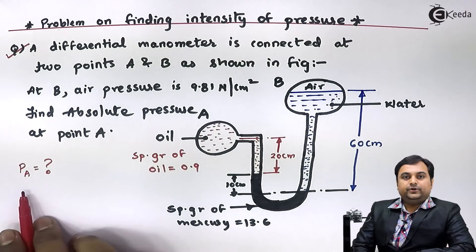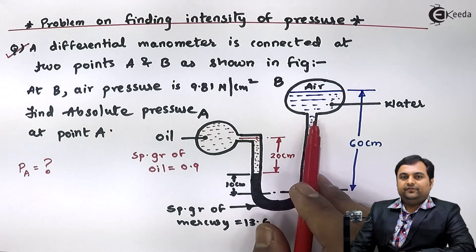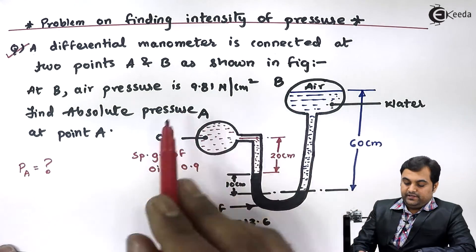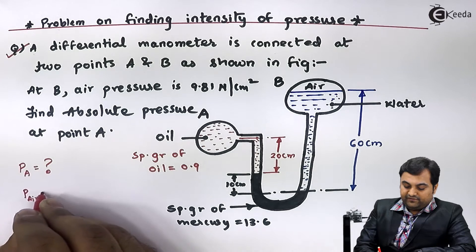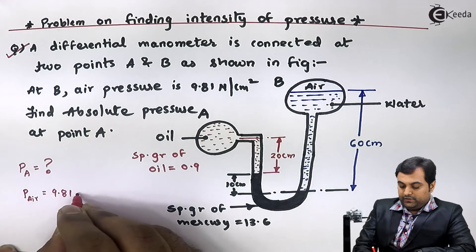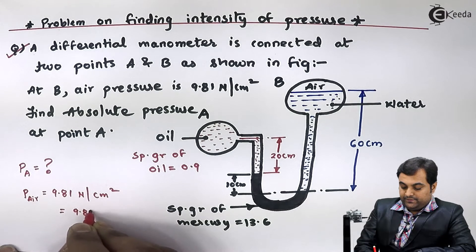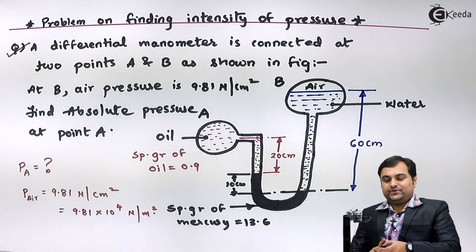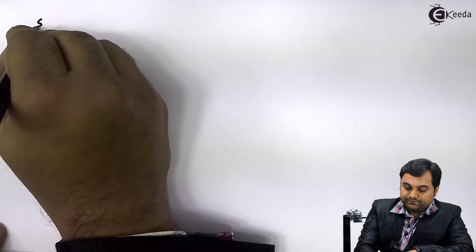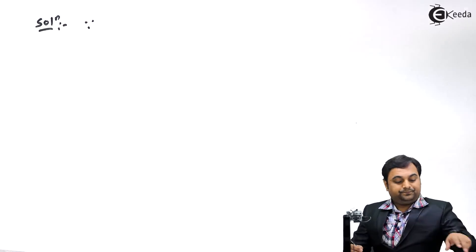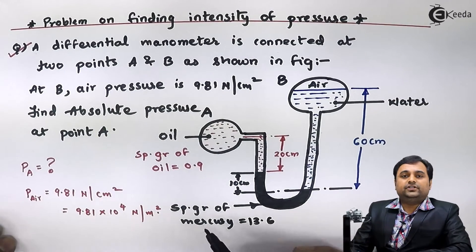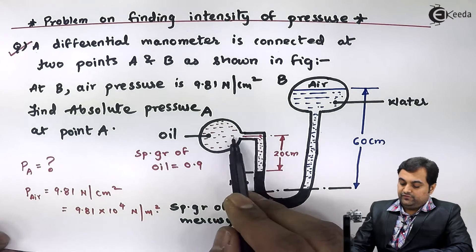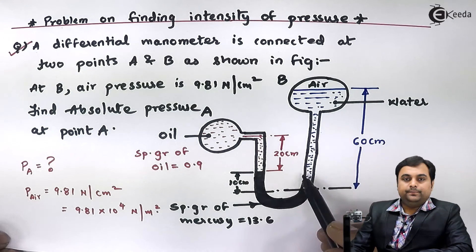To calculate the pressure at point A, we should know the pressure at point B. The air pressure is given in the question, so the pressure of air on the right limb — P_air — is equal to 9.81 Newton per centimeter square, or 9.81 × 10⁴ Newton per meter square. For a differential U-tube manometer, we have to equate both sides — that is, the left limb and the right limb. This is the pressure equation.